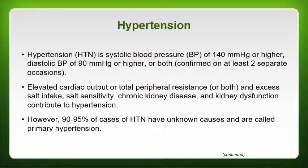Ninety to ninety-five percent of hypertension cases are what's called primary hypertension — basically hypertension with no known cause. Secondary hypertension is when there is a known cause, such as a medical condition like kidney dysfunction causing the hypertension.